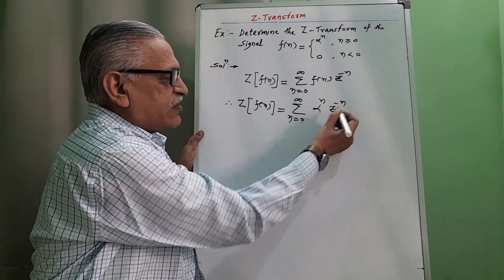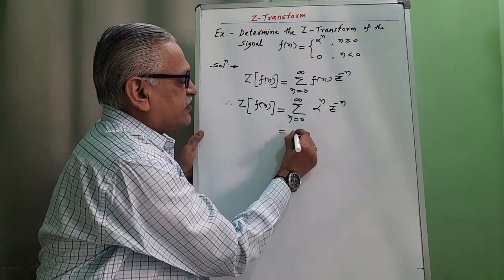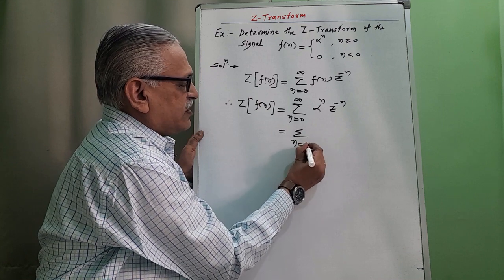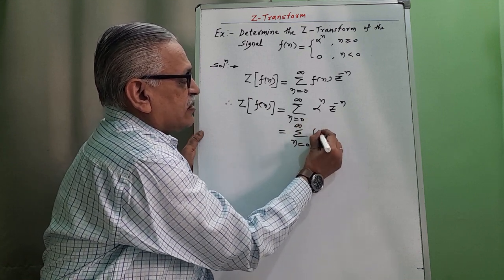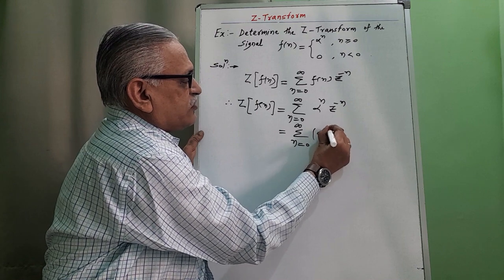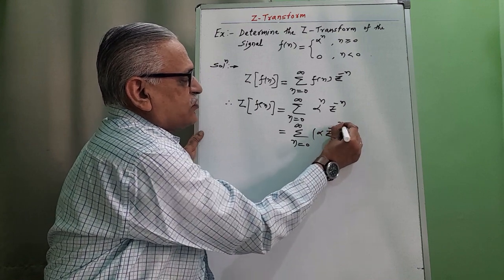Then, taking n common and rewriting it, it is summation from n equals 0 to infinity, alpha times Z raised to minus 1, whole raised to n.